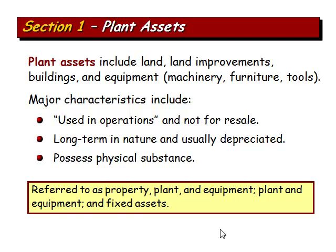Plant assets include things like land, land improvements, building equipment. The major characteristic is that it's something used in the operations and it's not for resale. So if we buy real estate with the intent on reselling it, then we're not using it in operations and we would not depreciate it. It's long-term in nature, usually depreciated, and possesses physical substance. Referred to as property, plant, and equipment, plant and equipment, or fixed assets — all those things mean the same thing in the accounting world.